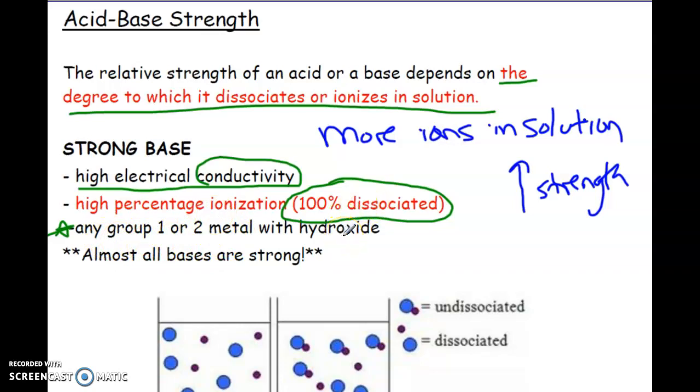The strongest bases are any group 1 or group 2 metal with hydroxide. Anything from the alkaline metal or the alkaline earth metal family is considered to be a strong base when it's with hydroxide. For example, potassium hydroxide, barium hydroxide, magnesium hydroxide, sodium hydroxide. Anything group 1, group 2 with hydroxide is considered to be strong. Almost all bases are strong. Almost all bases are considered to be strong. There's only one weak base that I expect you to know, and that is NH3, ammonia. But any group 1 or group 2 metal with hydroxide is a strong base. Actually, anything that has hydroxide in it typically is strong. Almost all bases are going to be strong.